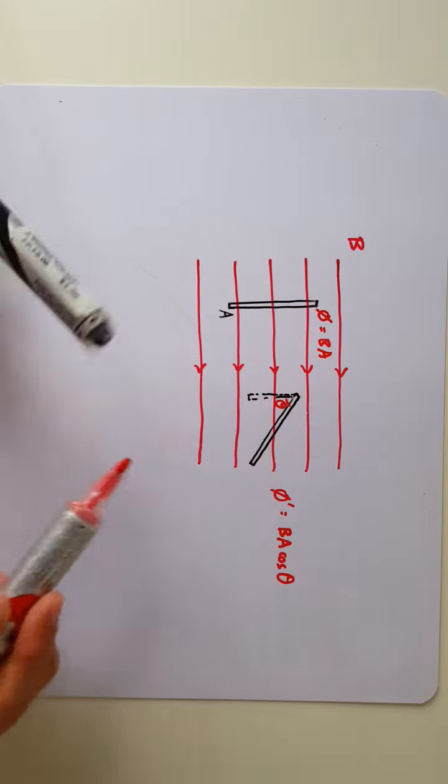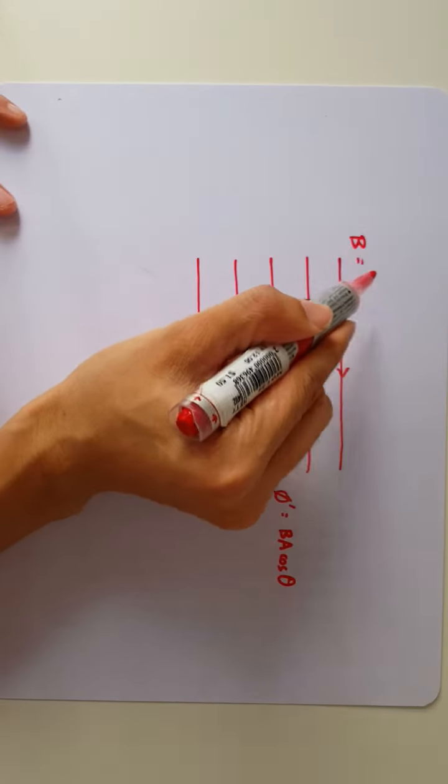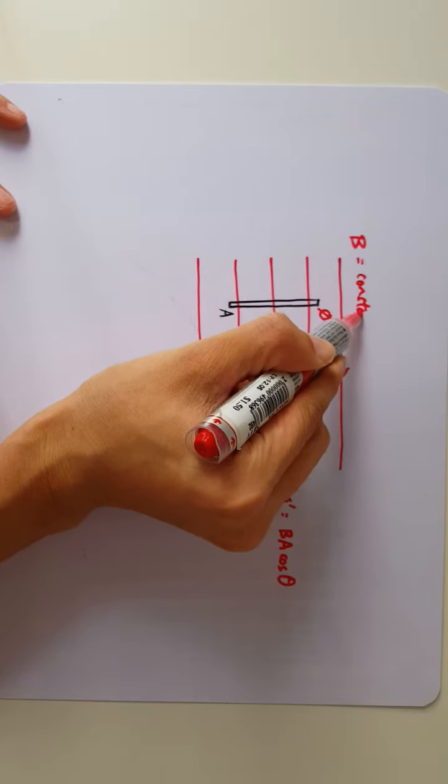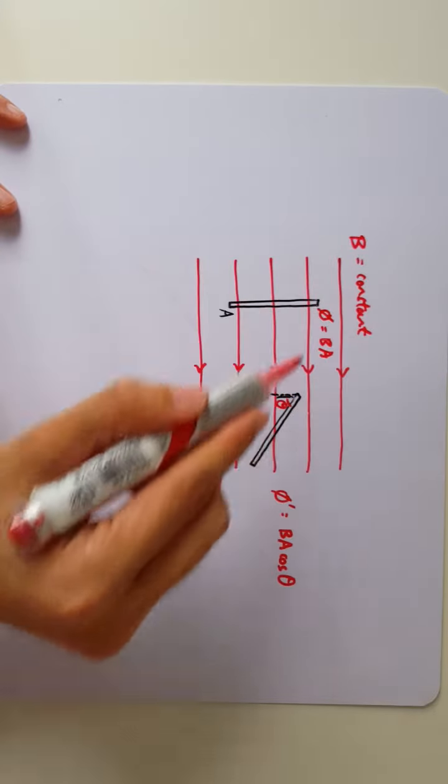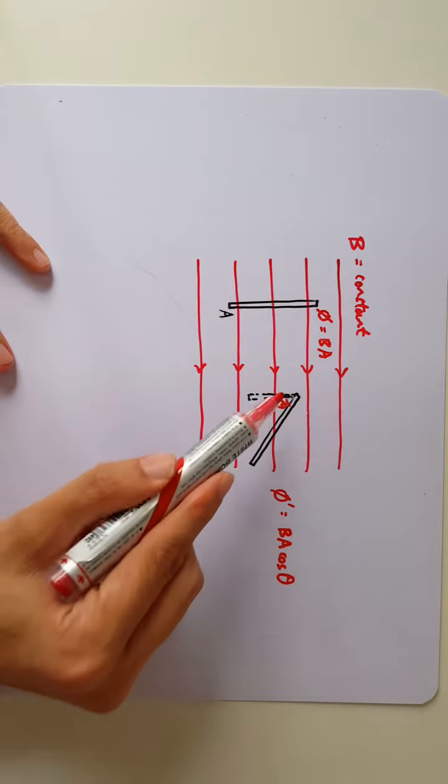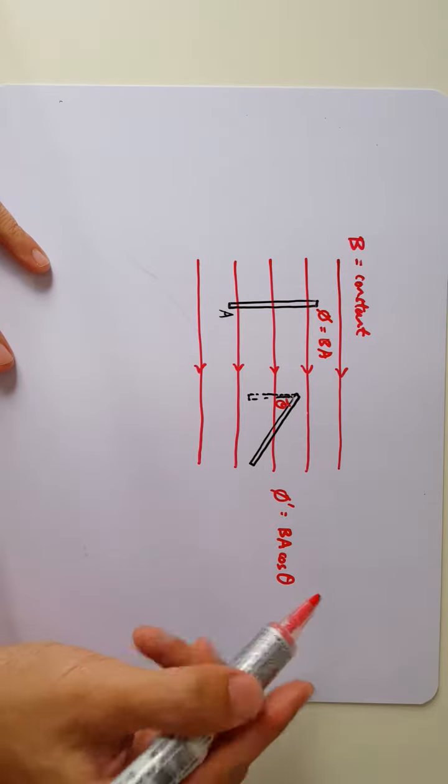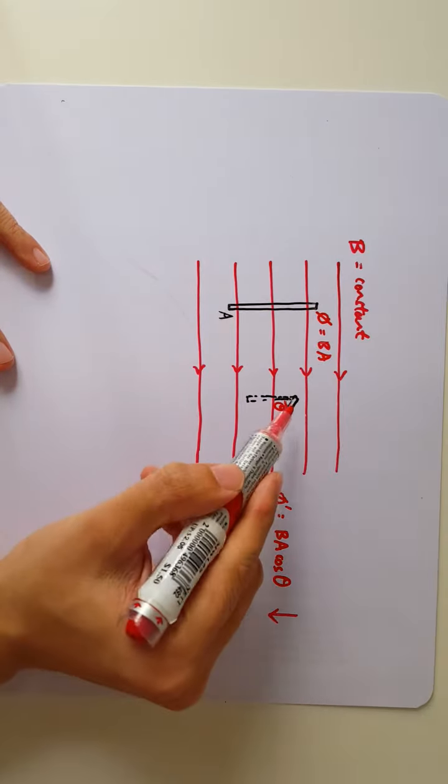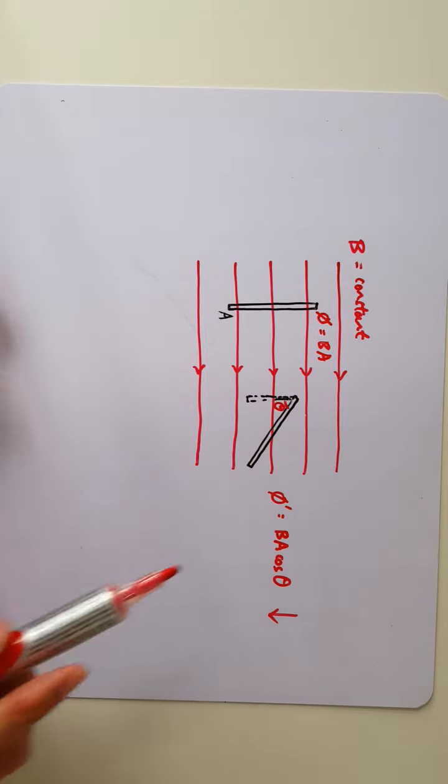It will be A cosine theta. So the external magnetic field, as stated in the question, is constant. It's not going to change. But the amount of flux captured by the coil has decreased simply because the effective area is much smaller.